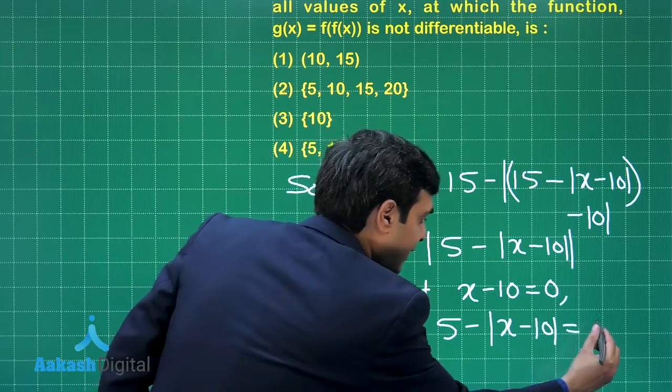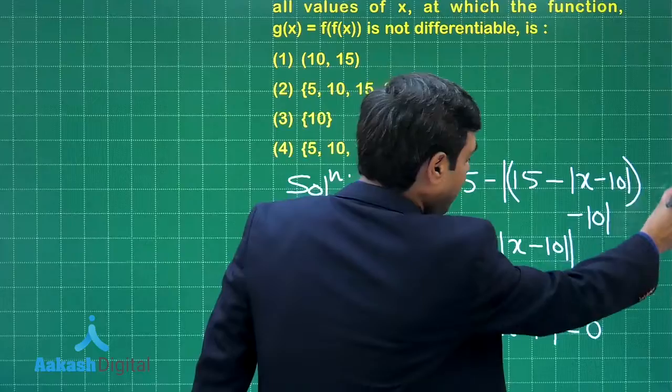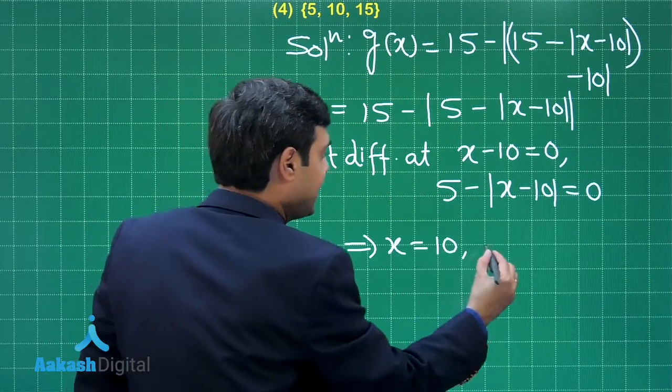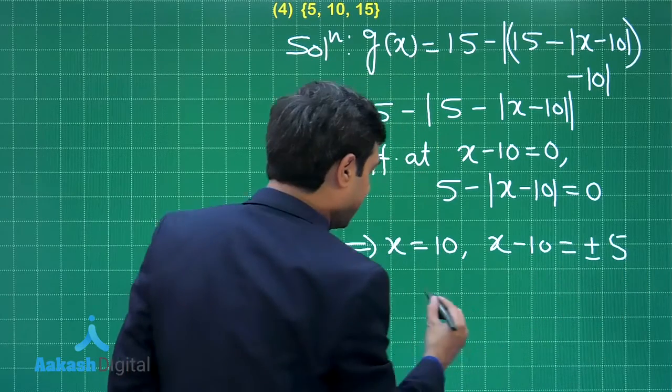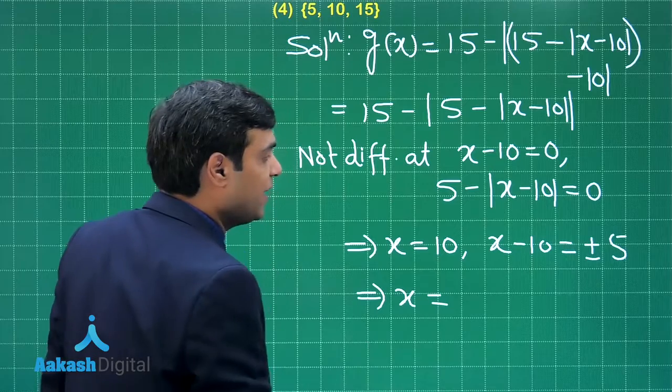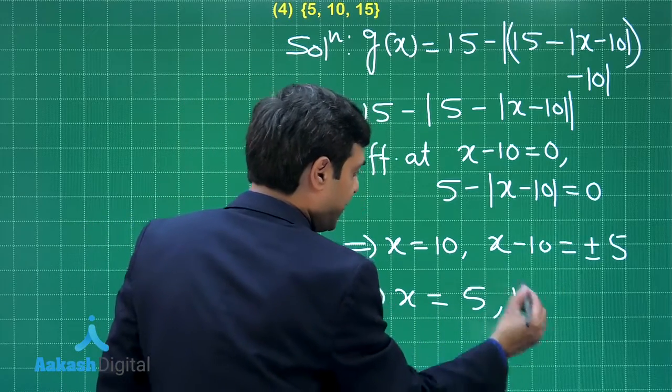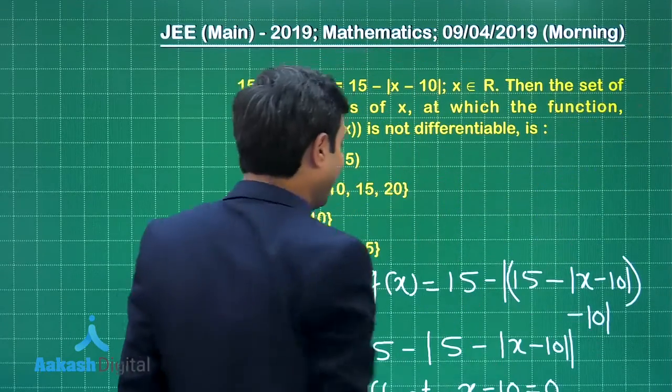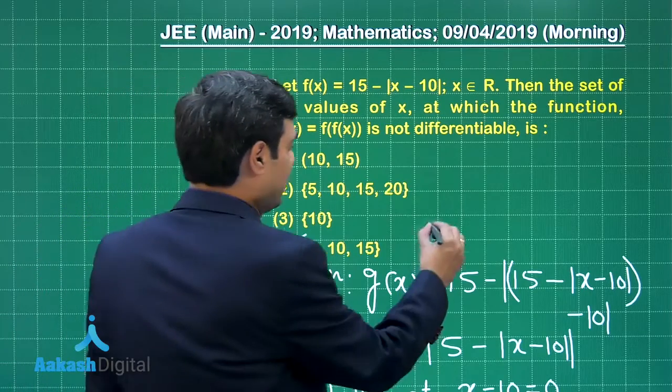When x - 10 = 0, and when 5 - |x - 10| = 0. From here we see x = 10 in one case, and x - 10 = ±5 in other cases. The possible values for x are 5, 10, and 15. So the correct answer is option number 4.